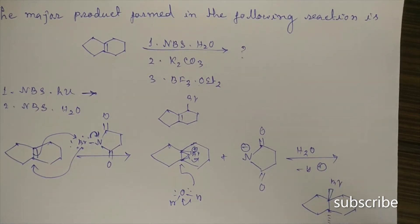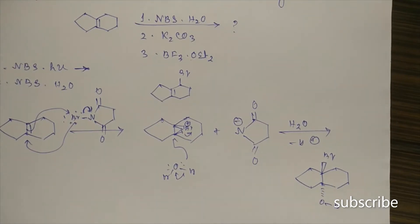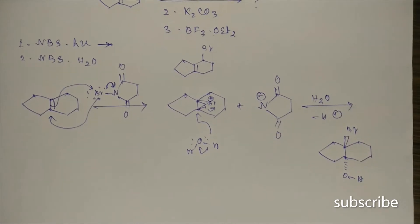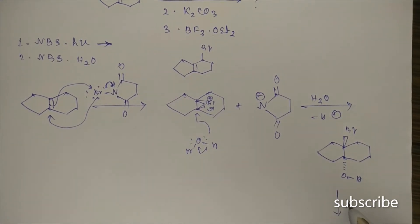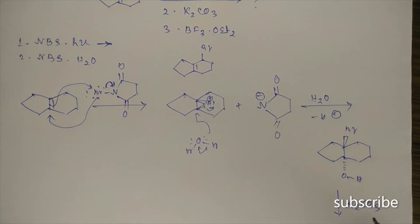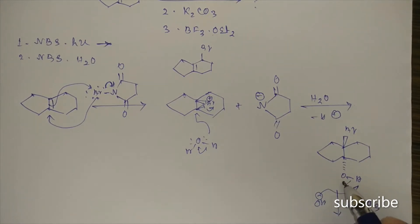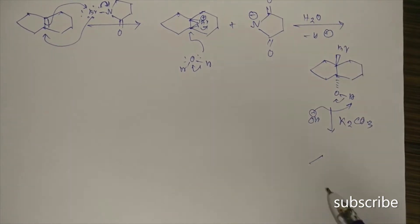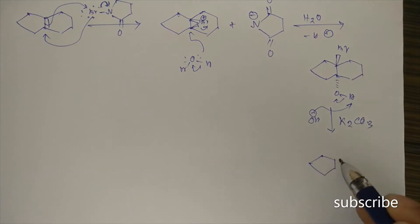Now it is treated with K2CO3. The aqueous solution of K2CO3 is basic, so it will abstract the proton from the OH group, giving an O⁻ (alkoxide).